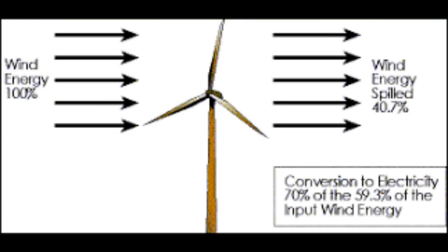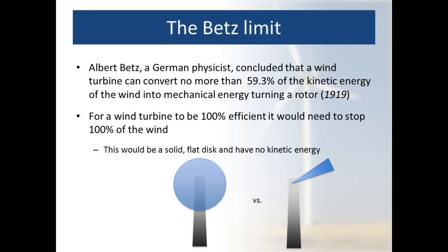Ever noticed how many triangles there are in physics? Anyway, that gives us the available power in the wind hitting your turbine — but there's a difference between available power and the power you actually get, because there are losses. The first and most well-known is the Betz limit. The Betz limit is not an arbitrary imposed limit; it's part of the physics of the system. Because air must flow over the blades, if you extract all the energy it stops flowing and the turbine stops. The maximum you can extract while keeping the air flowing is 59.3% — that is the absolute maximum of available power.